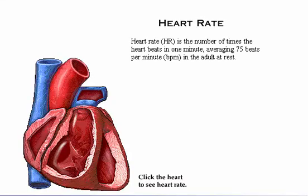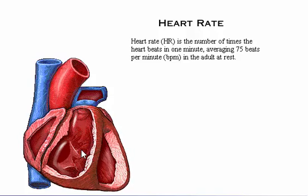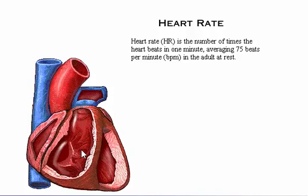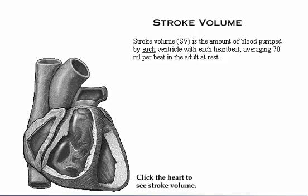Heart rate refers to the number of times the heart beats in one minute, averaging 75 beats per minute for an adult at rest. To see an animation of heart rate, click the heart illustration. Stroke volume refers to the amount of blood pumped by each ventricle with each heartbeat, averaging 70 milliliters per beat for an adult at rest. To see an animation of stroke volume, click the heart illustration.